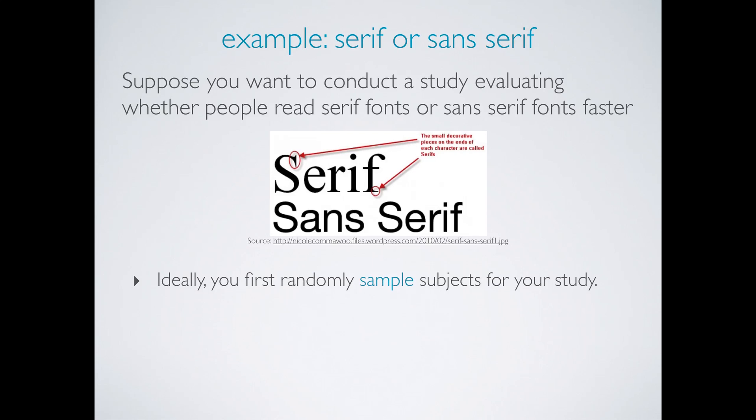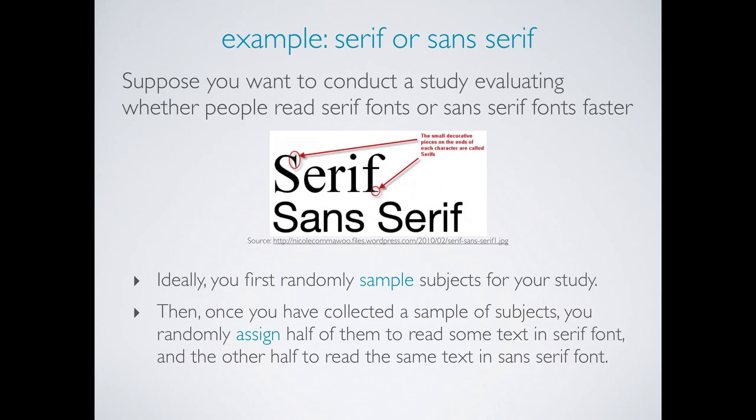Ideally you first randomly sample subjects for your study. Then once you have collected a sample of subjects you randomly assign half of them to read some text in serif font and the other half to read the same text in sans serif font.